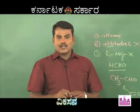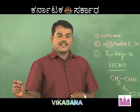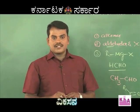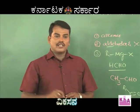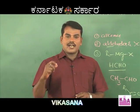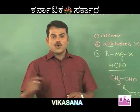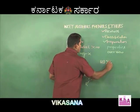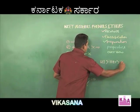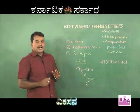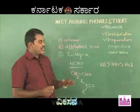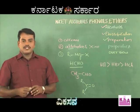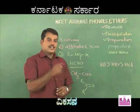The next property of alcohols is reaction with hydrogen halides. Alcohols react with hydrogen halides in the presence of a dehydrating agent like anhydrous zinc chloride, forming corresponding haloalkanes or alkyl halides. The reactivity of hydrogen halides varies in the following order: HI is more reactive than HBr, which is more reactive than HCl. This is the order of reactivity of hydrogen halides towards alcohols.